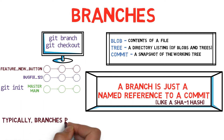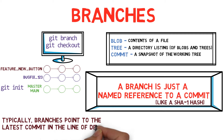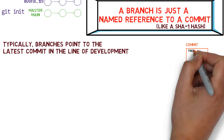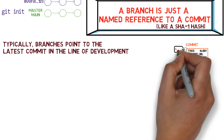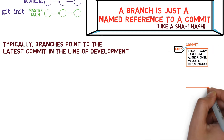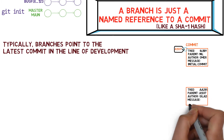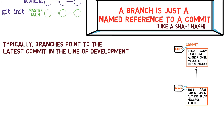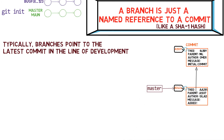Typically, the branch points to the latest commit in the line of development we're currently working on. So, say I created one commit, and now I made some changes and created another commit pointing to the previous one. I'd usually have the branch point to this second commit, which is currently the latest commit in this branch.